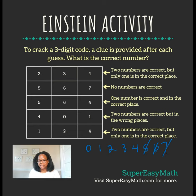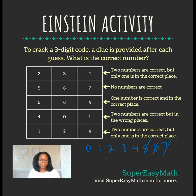The second clue says no numbers are correct, so I know that I can cross off the 5, the 6, and the 7. That's a really great clue. The third clue says one number is correct and in the correct place.